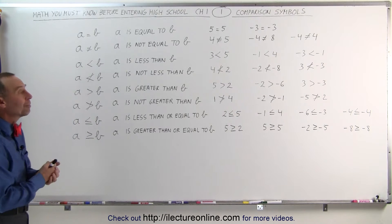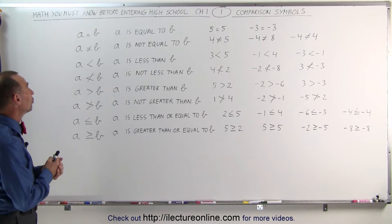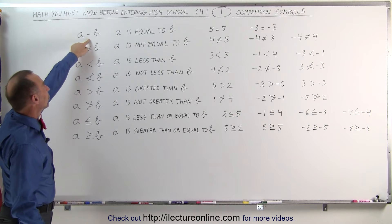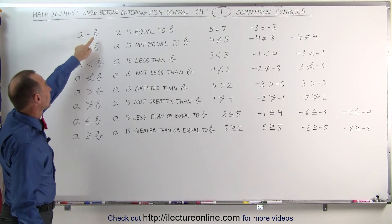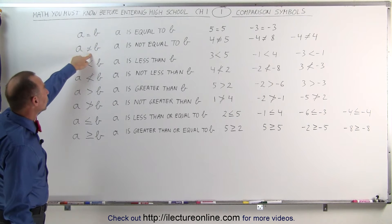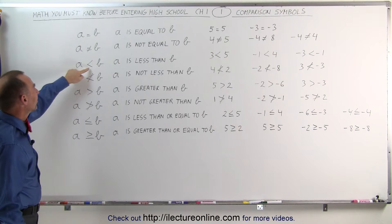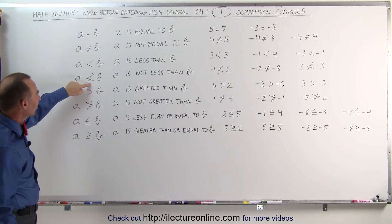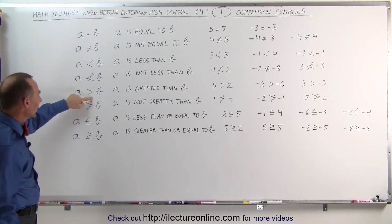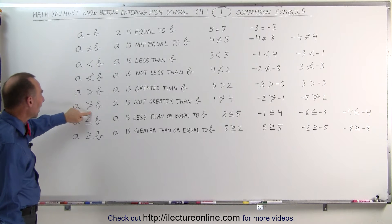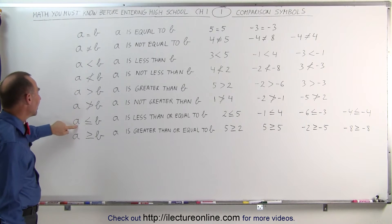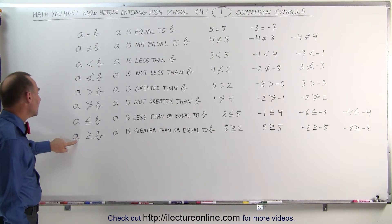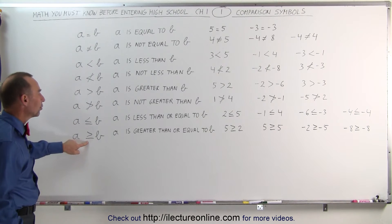First, we'll start with what we call comparison symbols. You should be familiar with the following symbols: A equals B, A is not equal to B, A is less than B, A is not less than B, A is greater than B, A is not greater than B, A is less than or equal to B, and A is greater than or equal to B.